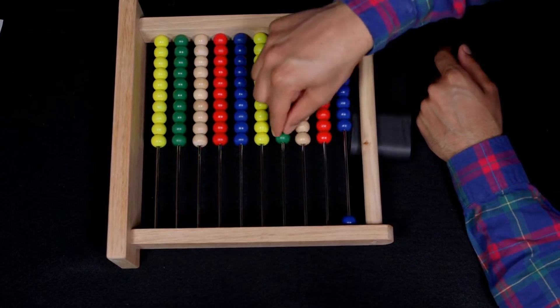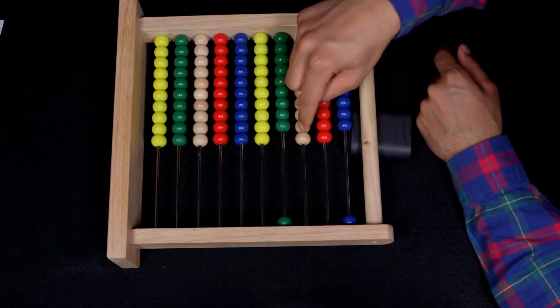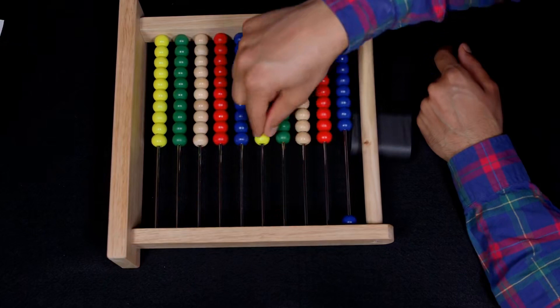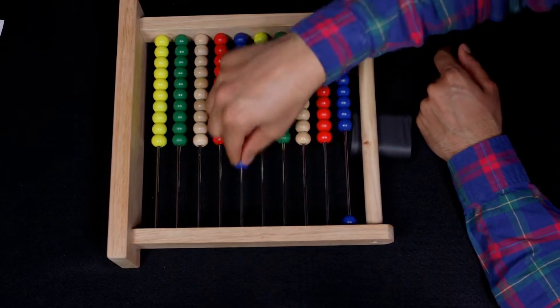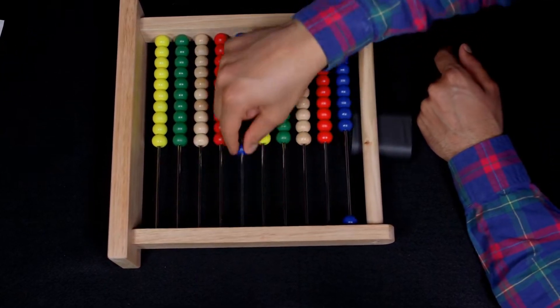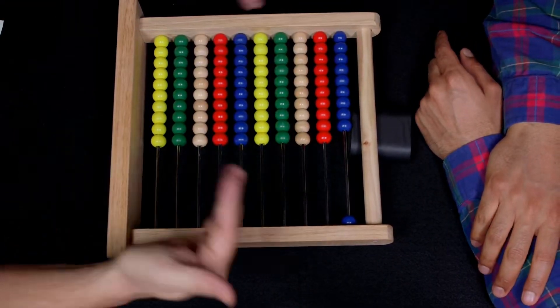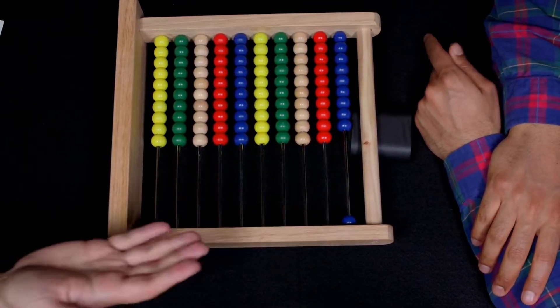And so this would be equivalent to ten of the brown beads which would be a hundred of the red beads, which would be a thousand of the blue beads. And this would be a hundred thousand of the blue beads. This would be a million of the blue beads. And we're going to be able to represent all the numbers in between, one and say a million.